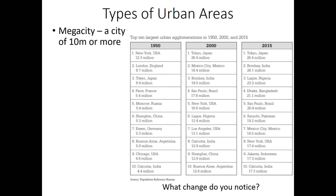Do you notice a change? Let's check out the 1950 list. We've got New York, London, Tokyo, Paris, Moscow, Shanghai, the Ruhr city of Germany, Buenos Aires, Chicago, and Calcutta, India. Notice the numbers as well: 12 million, 8 million, 7 million, all the way down to 4 million.